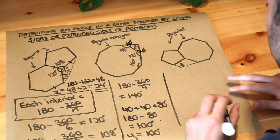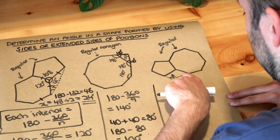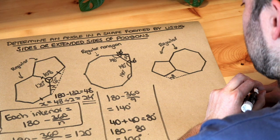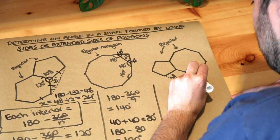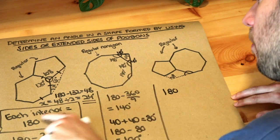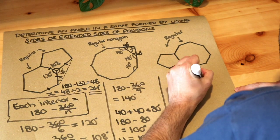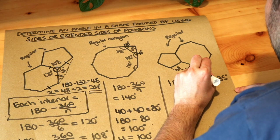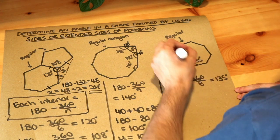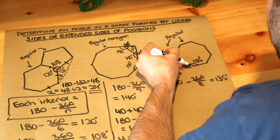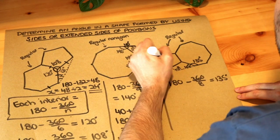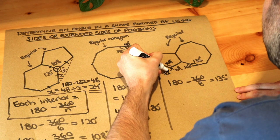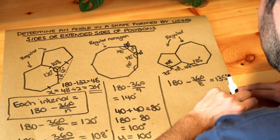The final one is a bit harder. We've got a shape outside these two polygons which has formed a quadrilateral. Angles in a quadrilateral add up to 360 degrees. The interior angle of the octagon is 180 minus 360 over 8, which gives 135 degrees. The extended side makes a straight line, so the exterior angle is 180 minus 135 equals 45 degrees. For the pentagon we already know the interior angle is 108 degrees, so that exterior angle is 180 minus 108 equals 72 degrees.